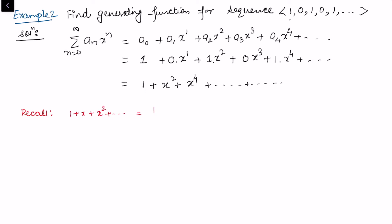Let's call 1/(1 - x) equation 1, and the series 1 + x² + x⁴ + ... equation 2. Comparing equations 1 and 2, in equation 1 no term is skipped, while in equation 2 only even powers appear.